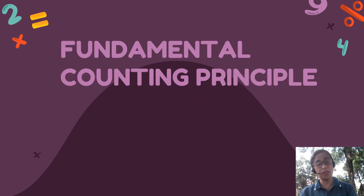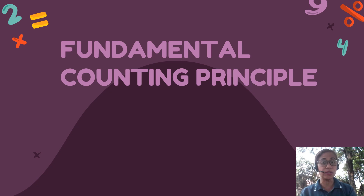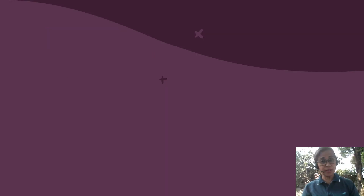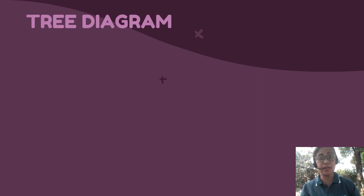The second topic I'm going to discuss, which is very much related to statistics and probability, is called the Fundamental Counting Principle. But before learning FCP, we have to first learn how to make a tree diagram, and the next method, which is a listing method. So let us start with a tree diagram.